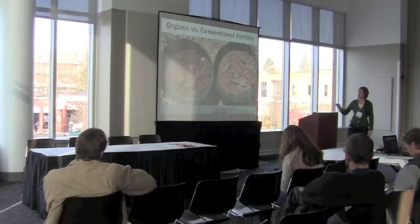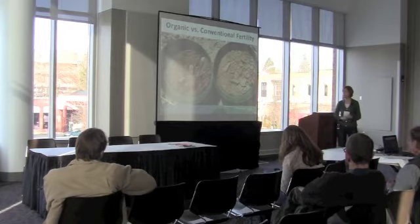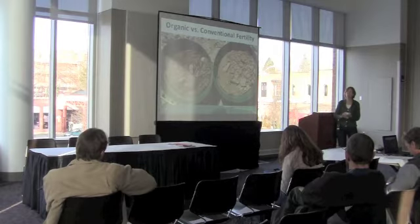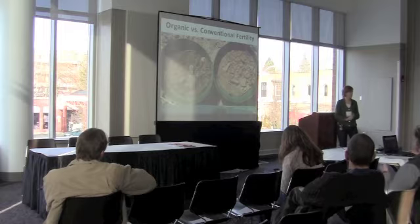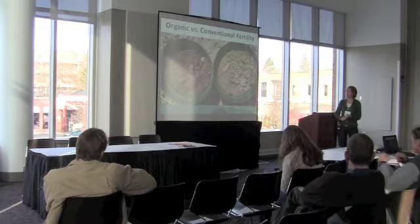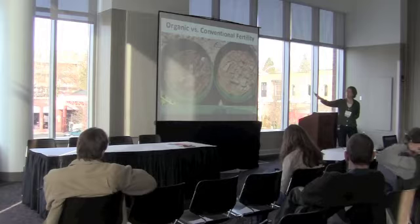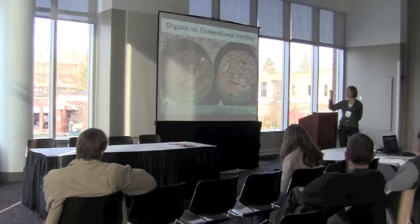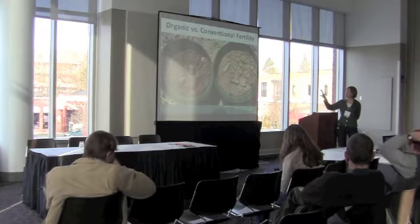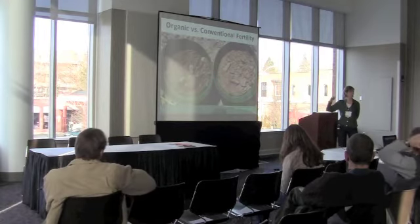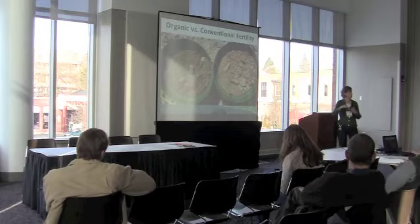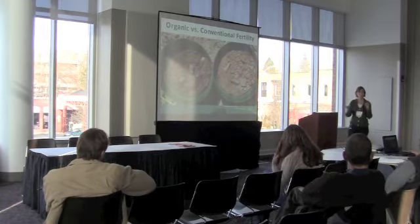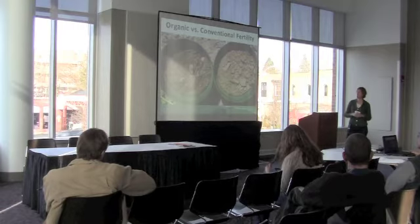We planted three different varieties: a high protein, low yielding variety; a low protein, high yielding variety; and the heritage variety Red Fife. I'm just going to talk about one variety today. In the organic system we used pre-plant manure — this is spring wheat. In the fertilizer-based system we used different rates of ammonium nitrate, basically trying to match protein levels at some point to do a comparison.